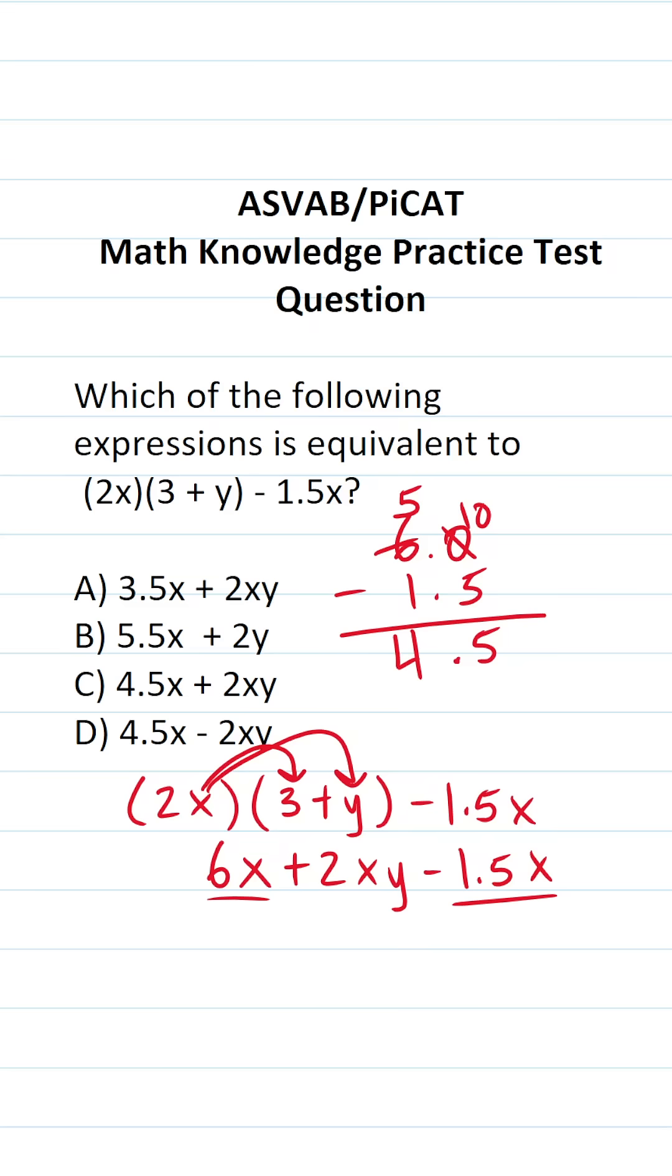So 6x minus 1.5x is going to be 4.5x plus 2xy. So the answer to this one is going to be 4.5x plus 2xy.